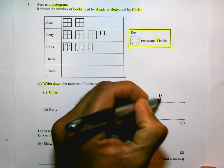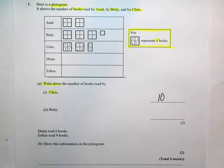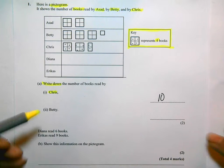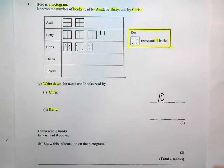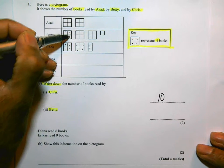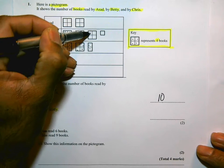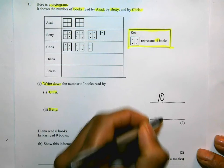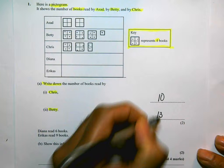How many books did Betty read altogether? Well, I'm doing a similar thing. One, two, three, four, five, six, seven, eight, nine, ten, eleven, twelve, thirteen. So Betty read thirteen books altogether.